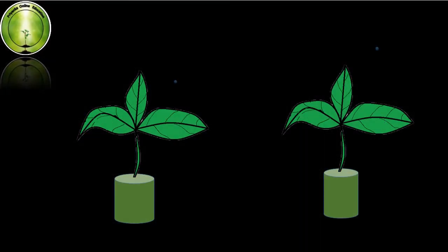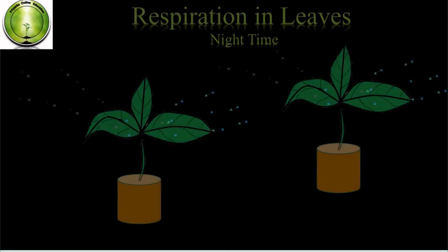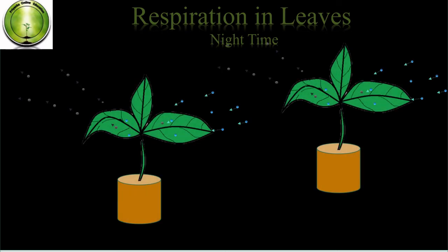At night time, as shown in the animation, there is no photosynthesis process — only respiration. In the process of respiration, atmospheric oxygen diffuses into the inner cells. After respiration, carbon dioxide is produced, which diffuses out into the atmosphere.